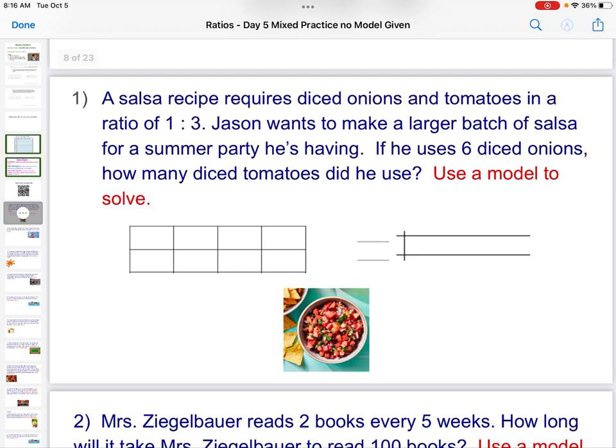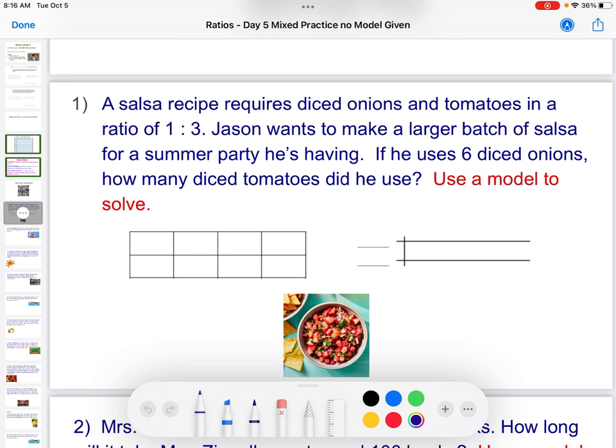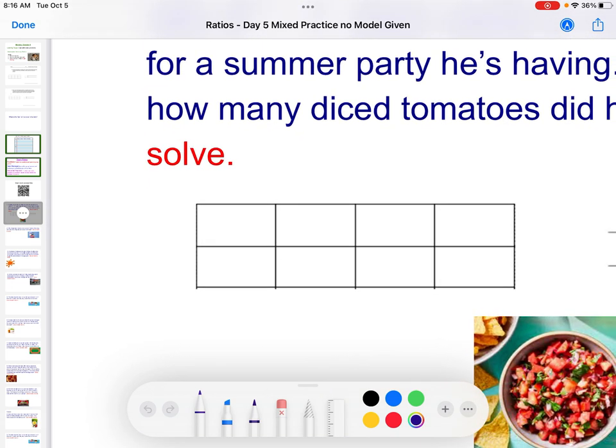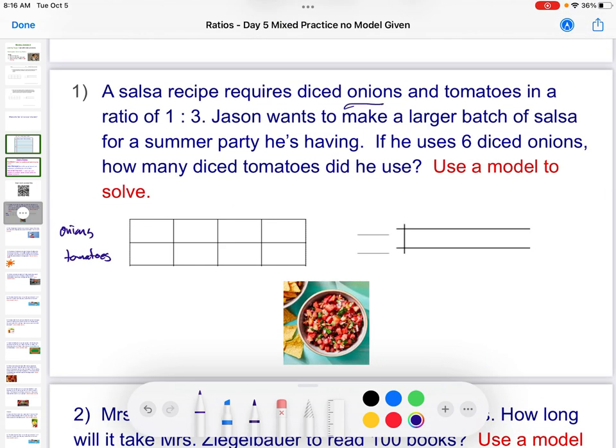I'm just going to work through some of these problems. I'm going to go probably at a very quick pace, and the reason I'm going to go at a quick pace is because you can always come back and listen to me on these. So a salsa recipe requires diced onions and tomatoes in a ratio of 1 to 3. Jason wants to make a larger batch of salsa for a summer party. If he uses six diced onions, how many diced tomatoes did he use? Use a model to solve. So the ratio is onions to tomatoes.